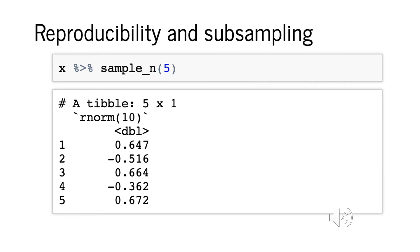Using this data frame x, we can use the function sample_n, which is part of the dplyr package, in order to sample a given number of rows from the data frame. Here, we're using 5.